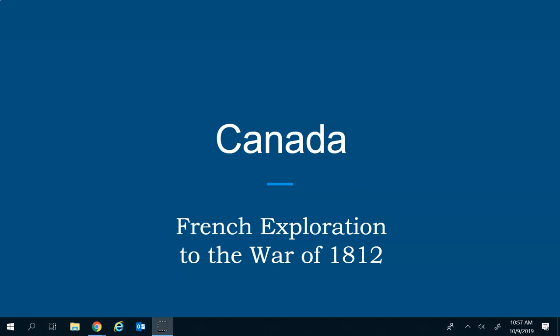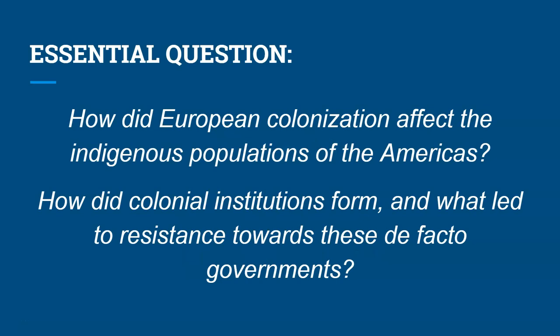We're also going to talk about French contact specifically with the English on the eve of the American Revolution, and how the American Revolution itself caused ripples not just within English society but also French colonial society. There are a couple of essential questions to remember: How did European colonization affect the indigenous populations of the Americas? And how did colonial institutions form, and what led to resistance towards these de facto governments?